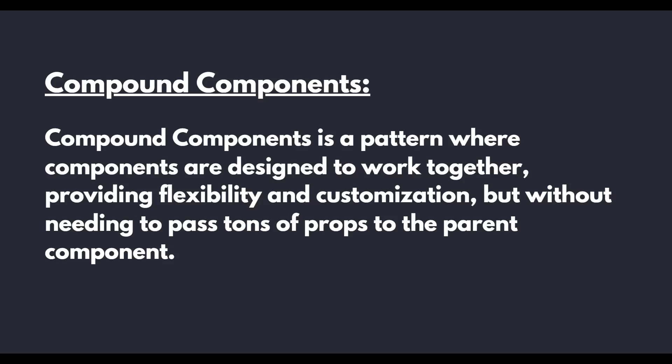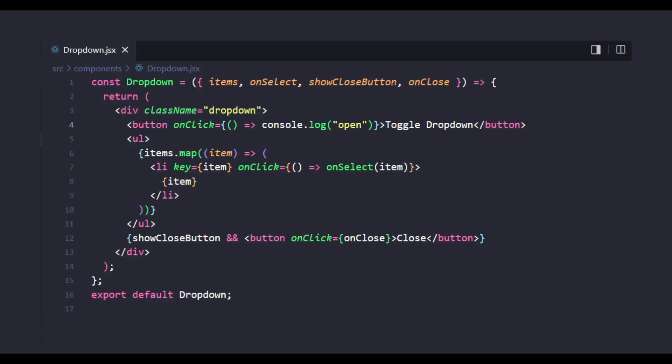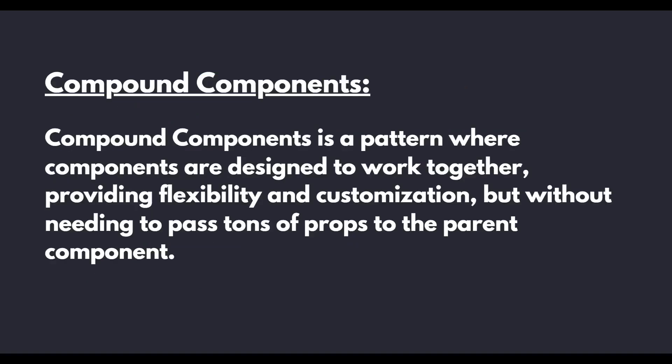Here you can see — if we want to show a close button, we need to pass a flag called 'showCloseButton'. If we want to use a reset button, we need to pass a prop like 'showResetButton'. So in our old component we need to pass a lot of props to achieve some of the functionalities or conditional rendering. That's the problem the compound component design pattern solves — without passing tons of props we'll be able to achieve the same functionalities.